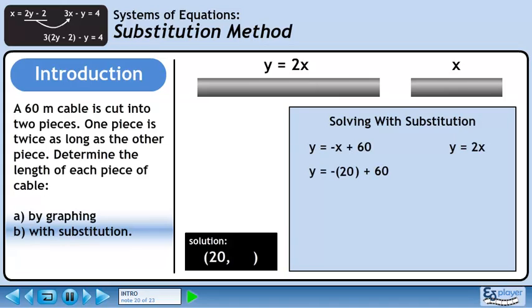Using the first equation, we'll plug in 20 for X. Minus 20 plus 60 gives 40. The Y value at the point of intersection is 40.